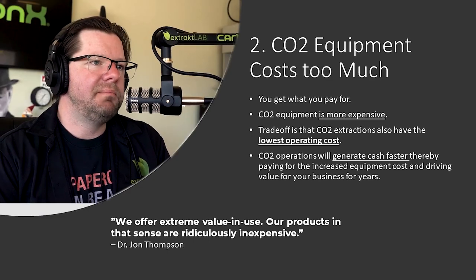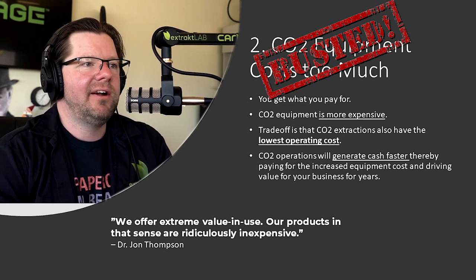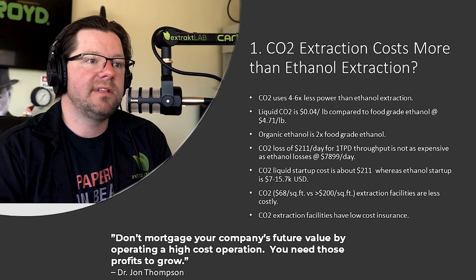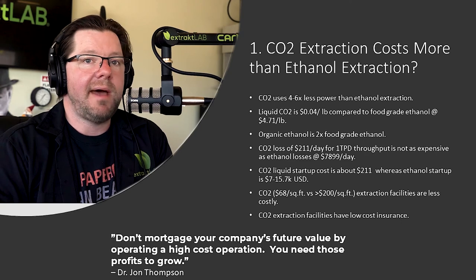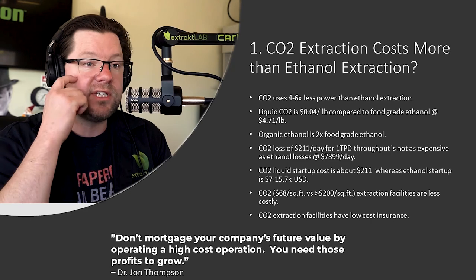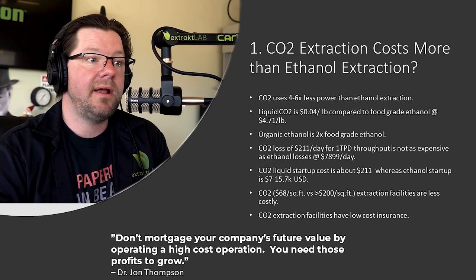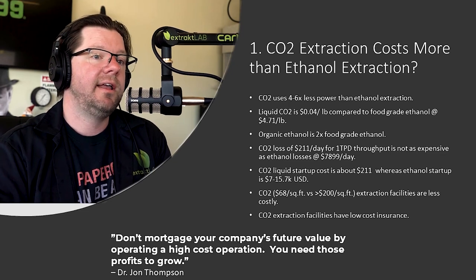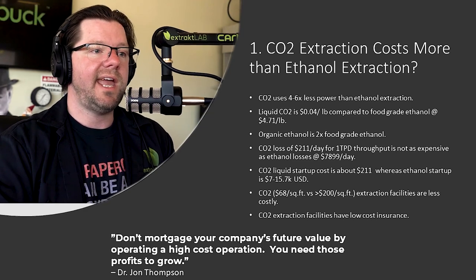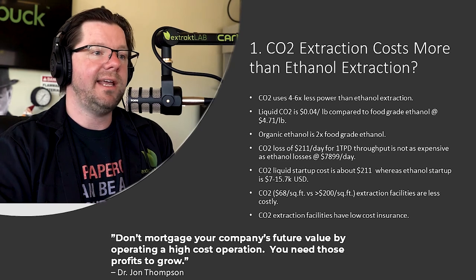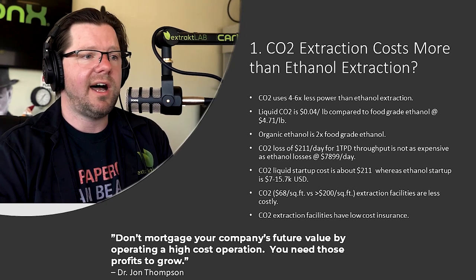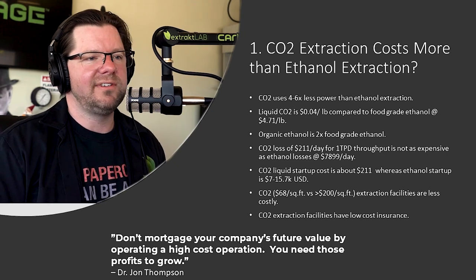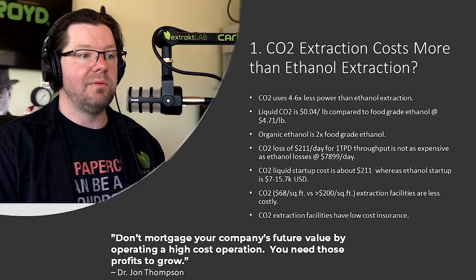Number 1: CO2 extraction costs more than ethanol. Absolutely not true. CO2 uses four to six times less power than ethanol extraction — evaporating huge amounts of ethanol is a big power cost, so CO2 wins there. Liquid CO2 is four cents a pound compared to ethanol at four dollars and seventy-one cents a pound — that's 117 times less cost. Ethanol losses cost a lot, and organic ethanol costs even more. Loss of CO2 per day for one ton is about $211, compared to $4,000 to $7,800 a day for ethanol.